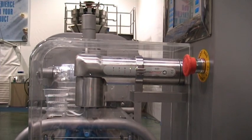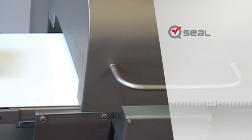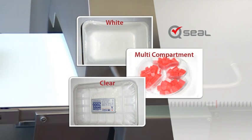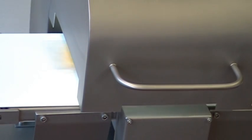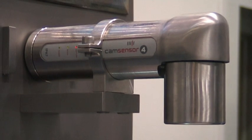The Q-Seal TrayPak system checks the seal integrity of plastic trays containing food products. Moving trays are scanned continuously by the CamSensor smart camera. Up to 200 trays per minute can be inspected.